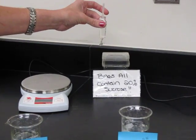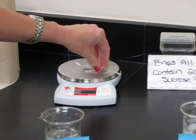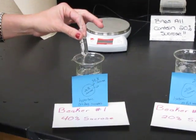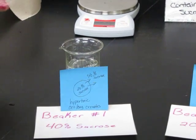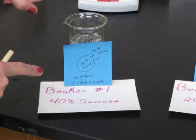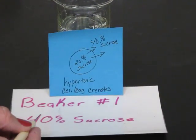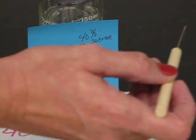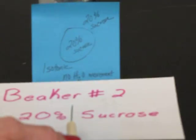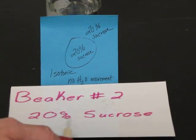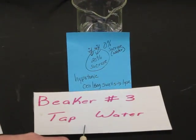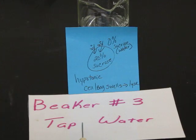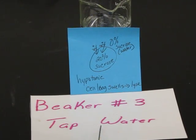We took each bag, weighed them, and then placed them into three separate beakers. Beaker 1 contained 40 percent sucrose. Beaker 2 contains 20 percent sucrose. Beaker 3 contains water or 0 percent sucrose.